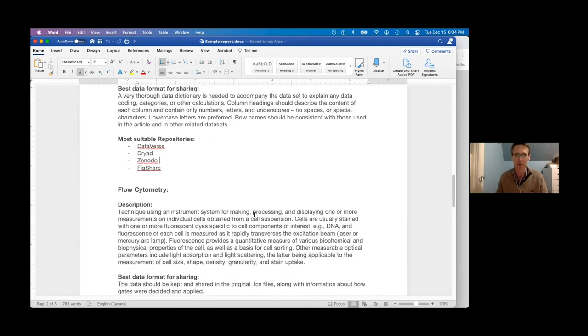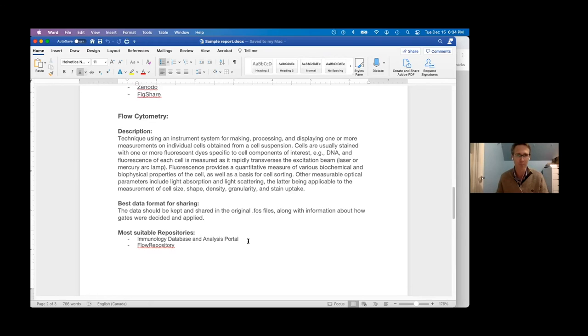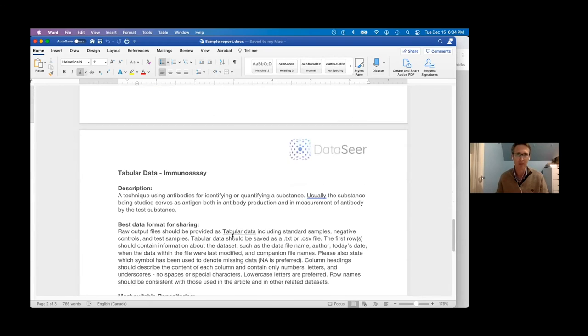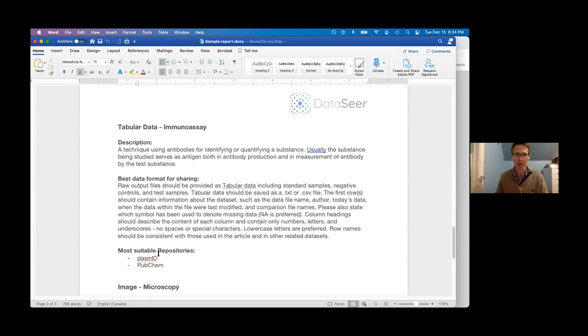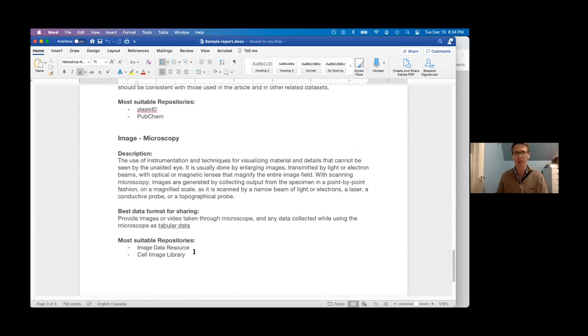And that's what we used to recommend repositories to the authors. And so here, flow cytometry should go, for mice, it should go on Immunology Database and Analysis Portal. And the immunoassay data should go on I-PLASMID. And the microscopy data should go up in the Image Data Resource and Cell Image Library.